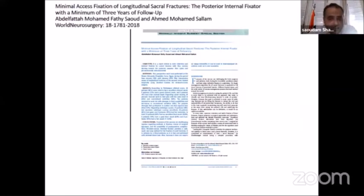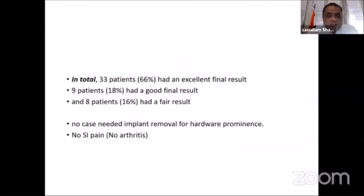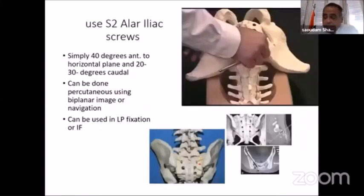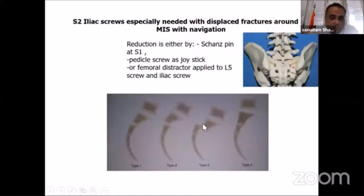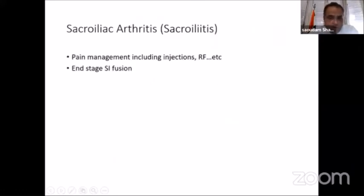Our longer-term follow-up of cases at three years showed 66 percent excellent final results, 18 percent good final results, and 16 percent fair results. The main problem with iliac screws is prominence at the iliac crest, so instead we can use S2 iliac screws, which can also serve as a joystick to reduce fractures and then be used for fixation. When used with lumbopelvic fixation, S2 iliac screws are more in alignment with the lumbar screws, so we are using them more and more now.